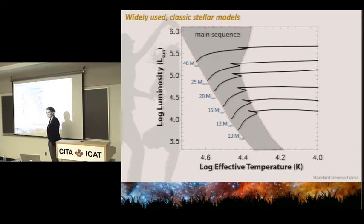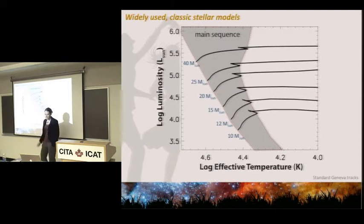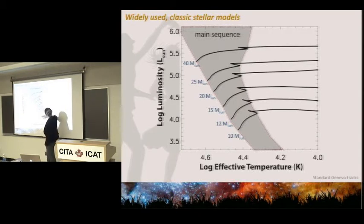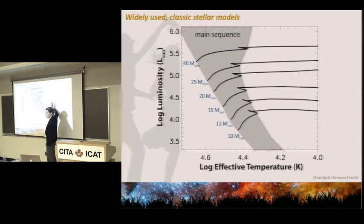A massive star is anything massive enough that it actually evolves — typically above 8 solar masses for core collapse supernovae. These are tracks for a 10 solar mass star up to a 40 solar mass star, showing how they evolve as they burn through their fuel. The main sequence is where they burn hydrogen very slowly. The prediction of these models is that this region is very densely filled on the hot side, with a very steep drop-off toward cooler temperatures.